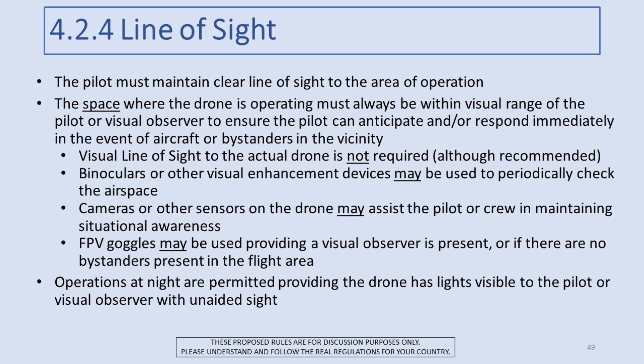Now we come to the doozy: line of sight. I'll come right out and say it — I don't think the visual line of sight rule, the first commandment of drone rules in all countries, makes any sense. I'd be willing to bet that the vast majority of drone flyers regularly do not have VLOS to their drones for a big portion of their flights. Because drones are small — if you take your eyes off it to look at your flight display even for a second, it will take you forever to spot your drone again, if you can at all.